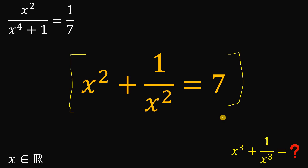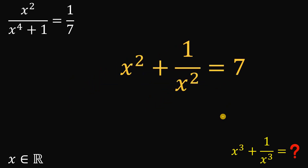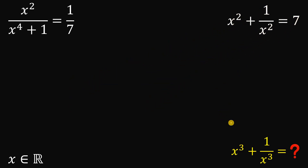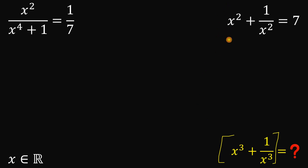This is very important because we now have the value of x squared plus one over x squared, which equals seven. Let's set aside this result — we will use it later. Our goal is still to find the value of x cubed plus one over x cubed.